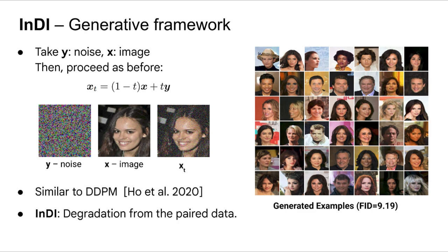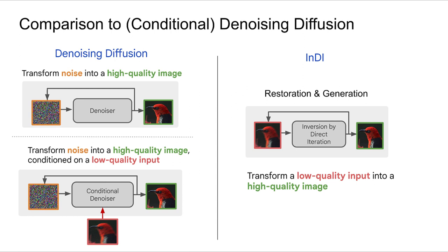If we look carefully at the INDI framework, when applying this particular case, it becomes very similar to a denoising diffusion model. The main difference is that here we are not using any analytical degradation. The degradation is implicitly encoded in y and x.